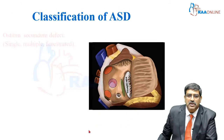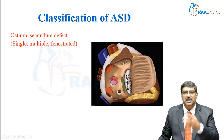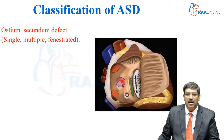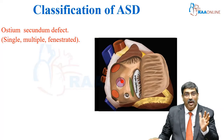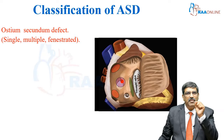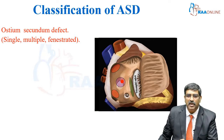The first common ASD is the ostium secundum ASD, which is in the middle of the septum. Here you can see the ostium secundum ASD. This can be single or multiple ASDs across the atrial septum, or it can be a fenestration across the septum.